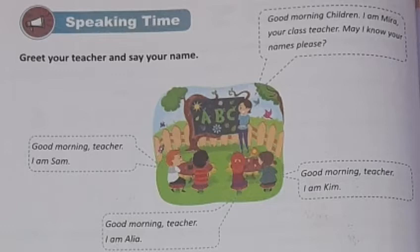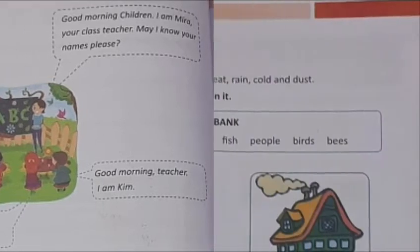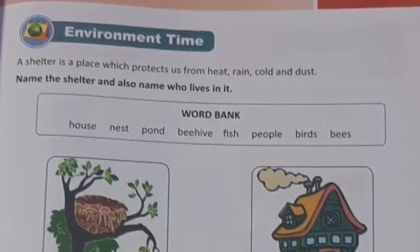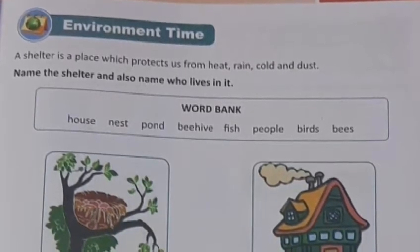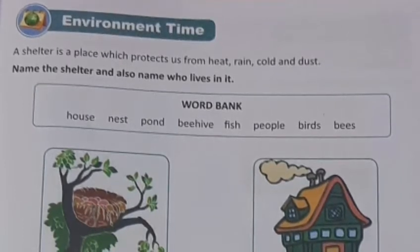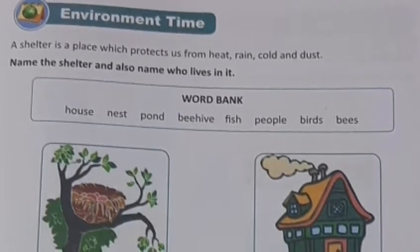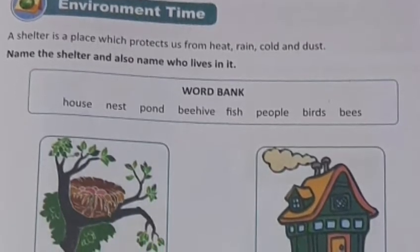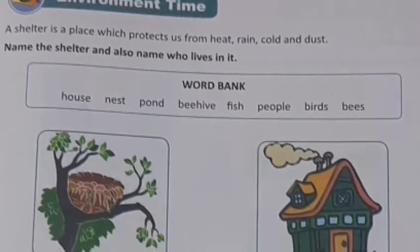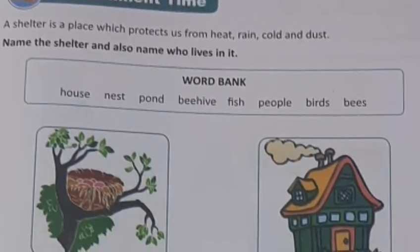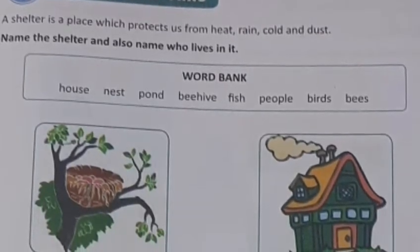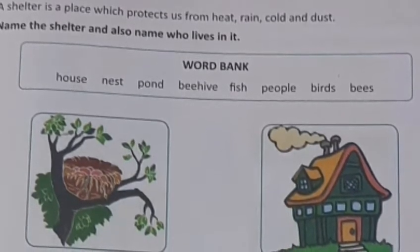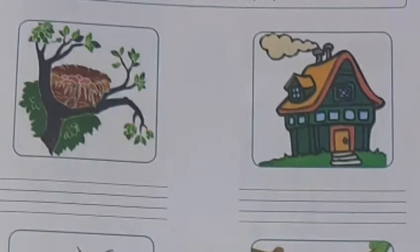You can practice this at home as well. Now page number 11, Environment Time. A shelter is a place which protects us from heat, rain, cold, and dust. Name the shelter and also name who lives in it. A word bank is given here with the words: house, nest, pond, beehive, fish, people, birds, bees.